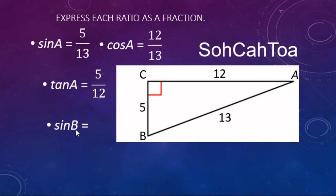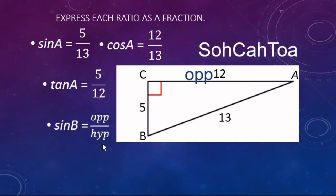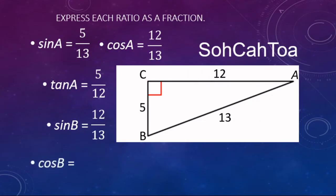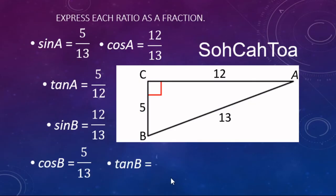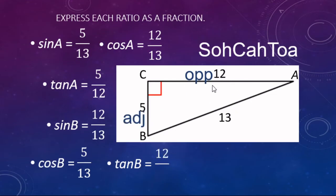Now let's find sine of angle B. The letters after sine, cosine, tangent do mean something - in this case we're looking at vertex B. Sine is opposite over hypotenuse: B is on the bottom, the opposite leg is on the top which is 12, and the hypotenuse is still 13. So sine of angle B equals 12 over 13. For cosine of angle B: the leg touching angle B is 5 for adjacent, and hypotenuse is 13, so cosine of B equals 5 over 13. For tangent of angle B: opposite was 12 and adjacent was 5, so tangent of B equals 12 over 5.